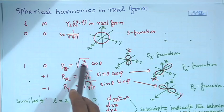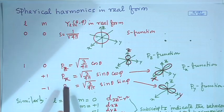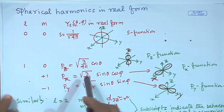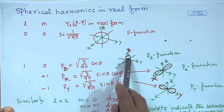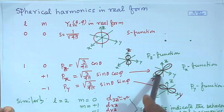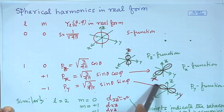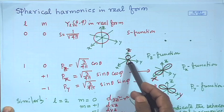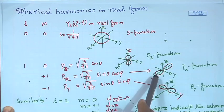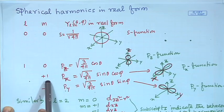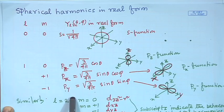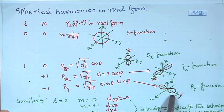Why are they called P_z, P_x, P_y? The nomenclature comes from the distribution along each axis. P_z has its distribution along the z-axis, P_x along the x-axis, and P_y along the y-axis. So P_x corresponds to L=1, M=+1; P_z to M=0; and P_y to M=−1, as per the distribution of the angular probability in Cartesian coordinates.